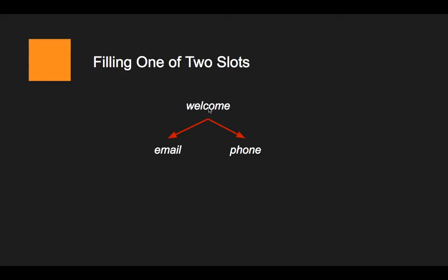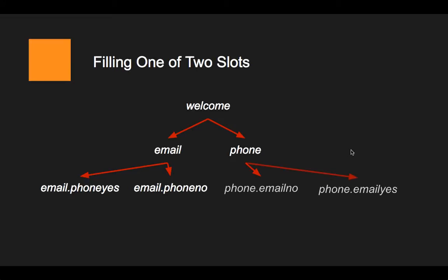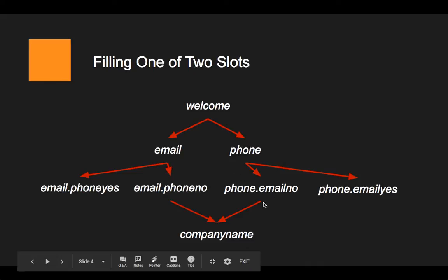What we have to do in this case is create two intents — email and phone — with the training data to recognize email and phone respectively. Then at the end of each, so here the user is providing email and we say: 'Thank you for providing your email. Do you want to provide your phone number as well?' Then we create follow-up intents for the case of yes and no. Same for the phone: 'Do you want to provide your email address as well?' — yes and no. In the case of no, we're going to say: 'Okay, no worries, but can you give us your company name?'